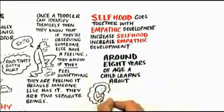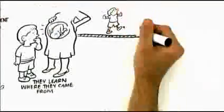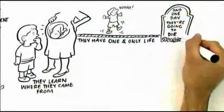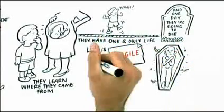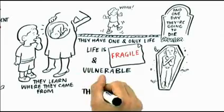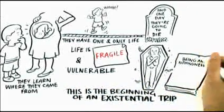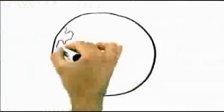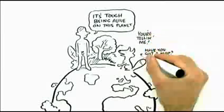Around eight years of age, a child learns about birth and death. They learn where they came from, that they have a one and only life, that life is fragile and vulnerable, and one day they're going to die. That's the beginning of an existential trip because when a child learns about birth and death, they realize how fragile and vulnerable life is. It's very tough being alive on this planet.